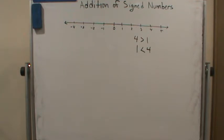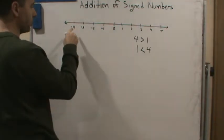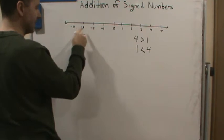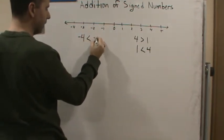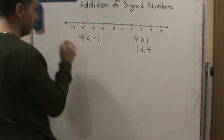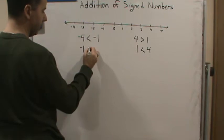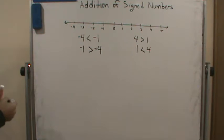Also, on the negative side, we see that negative four is to the left of negative one. So negative four is less than negative one. We would write negative four is less than negative one, or equivalently, negative one is greater than negative four. Either one is correct.